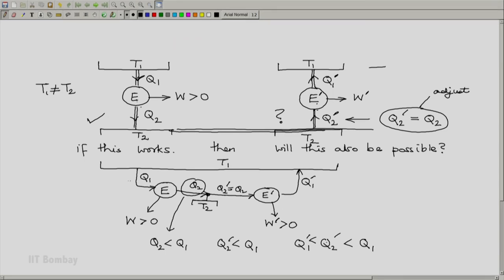Now consider the whole of this as an engine, a combined engine, E and E prime put together. It is a cyclic device because E is a cyclic device, E prime is a cyclic device, and T2 does not come into picture because it receives no net heat. Now what does it do?